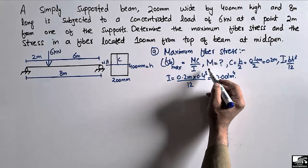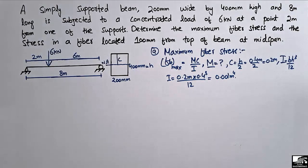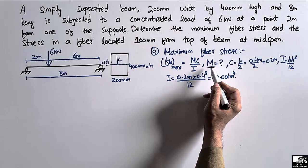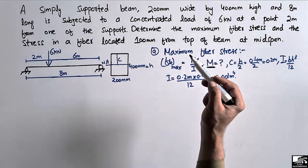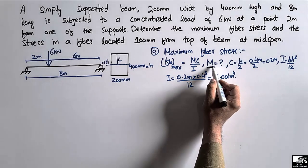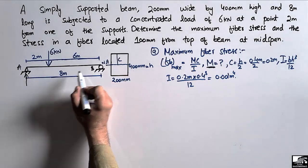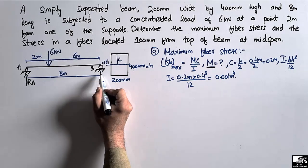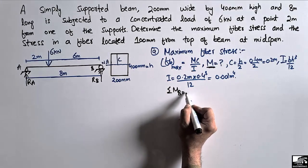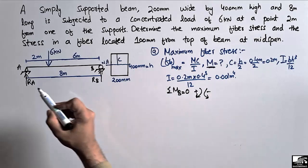Now the only unknown is the moment M. To find it, we need to find the support reactions and draw the shear force and bending moment diagram. Let support A have reaction R_A and support B have reaction R_B. We take the summation of moments at point B equal to zero, with clockwise moment taken as positive and counterclockwise as negative.